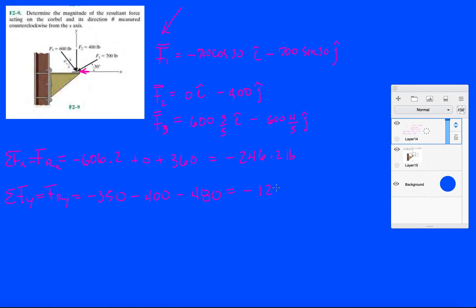These are your two components. Now let's get the resultant force. We're just going to square each component, add it up, don't worry about the signs because we're going to square it. 246.2 squared plus 1230 squared, square root of all that, and you got 1254.4 pounds. That is our resultant - that's the magnitude of our resultant force.